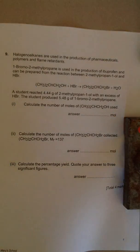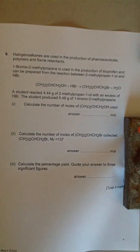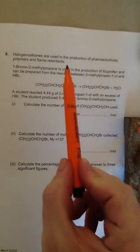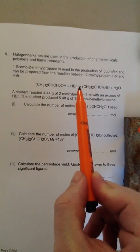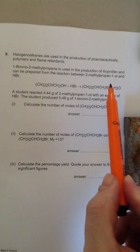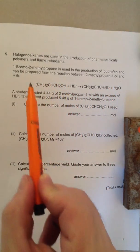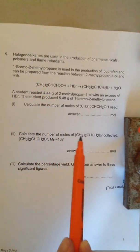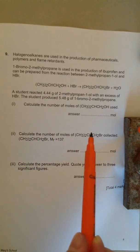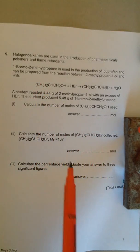So in these types of questions, you'll be given a chemical reaction. In this case, it's a reaction of an alcohol with HBr to give a halogenoalkane. And you have to calculate the number of moles that were used, in this case of the alcohol, the number of moles of your halogenoalkane that were made, and then a percentage yield.